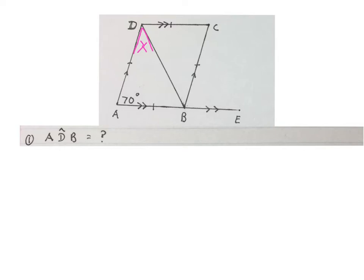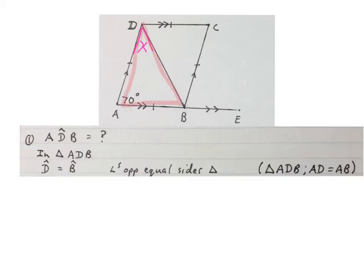First question asks: work out the size of angle ADB, the angle indicated with a different color up there. A possible solution is you can say in triangle ADB, the red triangle, angle D is equal to angle B, angles opposite equal sides of a triangle.